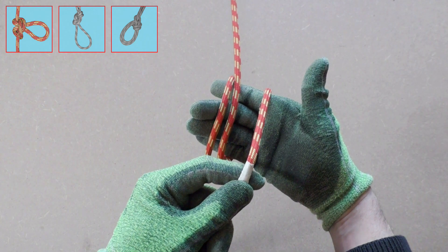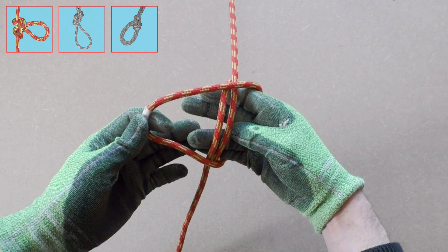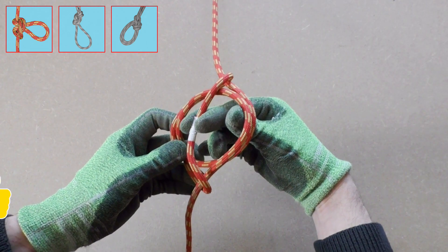Take the marked strand and pull out some rope. We bring this loop over to the left of the loops. Now open the loops so you can pull the marked loop through the other loops.